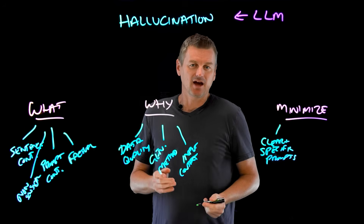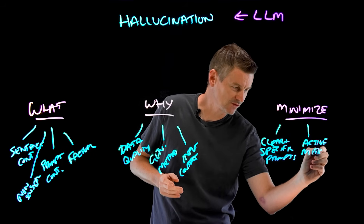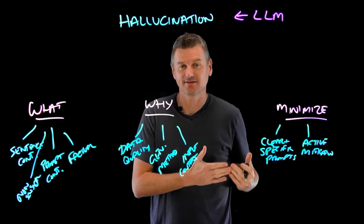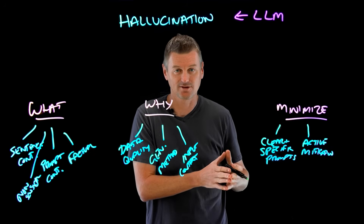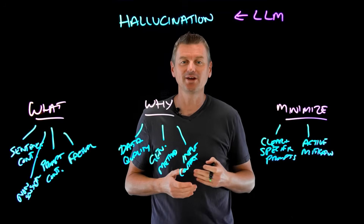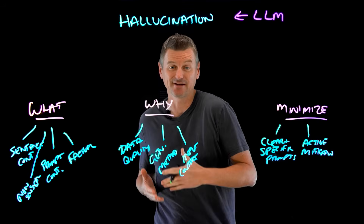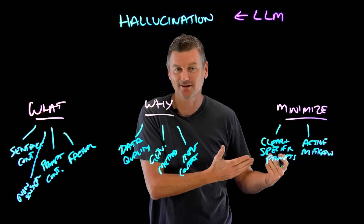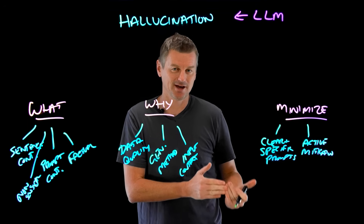We can also employ active mitigation strategies, which involve using some of the settings of LLMs — parameters that control how the LLM works during generation. A good example is the temperature parameter, which controls the randomness of the output. A lower temperature will produce more conservative and focused responses, while a higher temperature will generate more diverse and creative ones. But the higher the temperature, the more opportunity for hallucination.